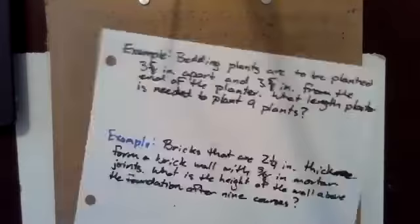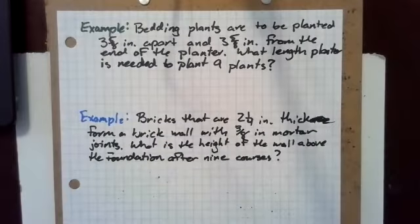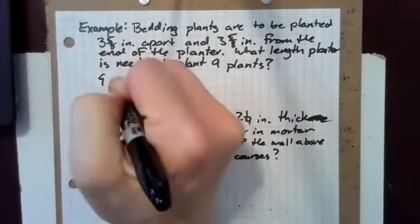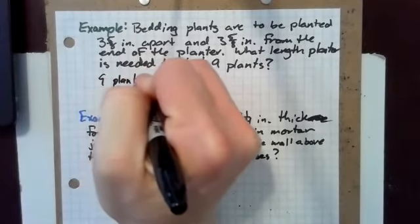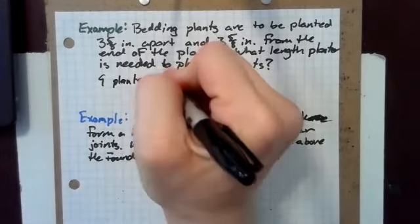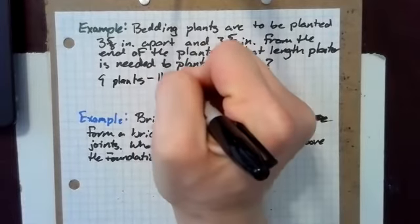So now we've got a couple of more applied examples. First, bedding plants are to be planted three and five eighths inches apart and three and five eighths inches from the end of the planter. What length planter is needed to plant nine plants? If we want to plant nine plants, that means we need eight spaces between the nine plants and one at each end. So we have 11 times three and five eighths.